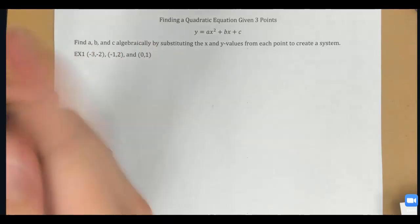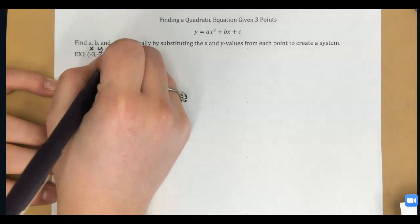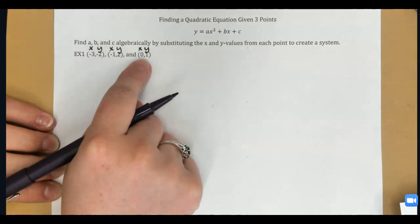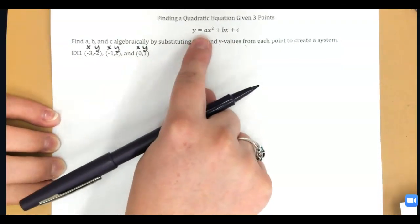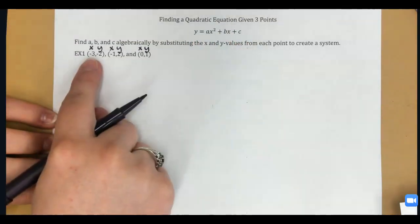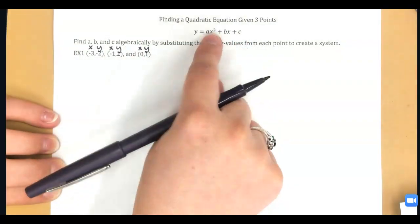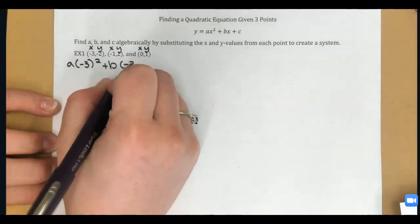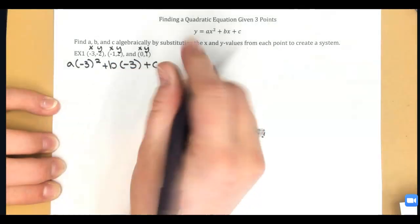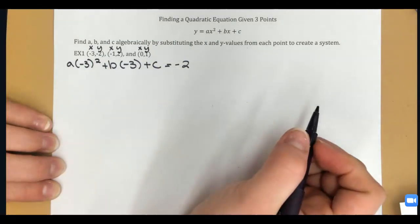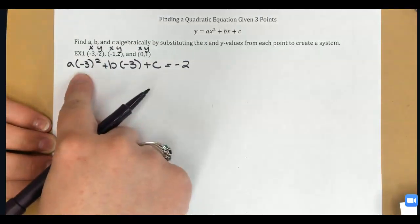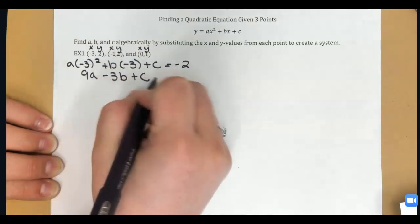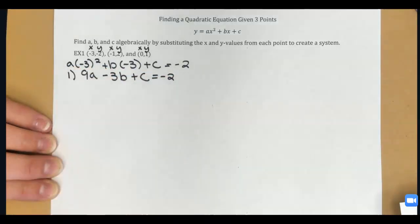On example one, I have my three points — each one is an XY pair. I'm going to substitute each of those pairs into standard form to find A, B, and C. For my first equation, I'll plug in negative 3 for X: A times negative 3 squared plus B times negative 3 plus C equals my Y value, negative 2. Since negative 3 squared is 9, that gives me 9A minus 3B plus C equals negative 2. That's my first equation.